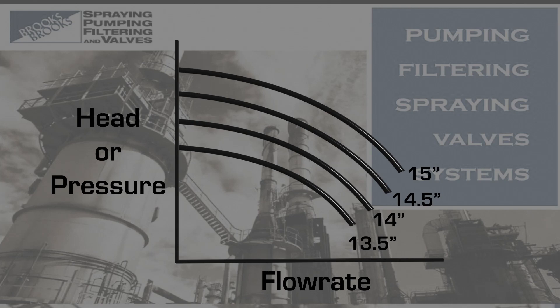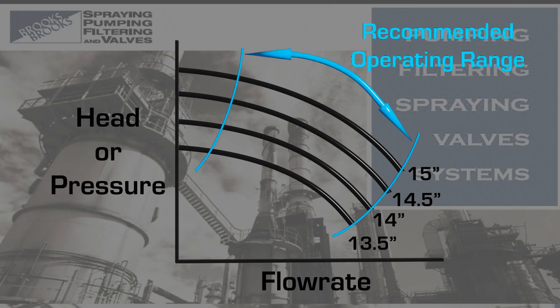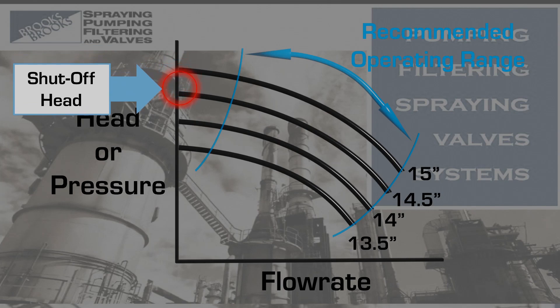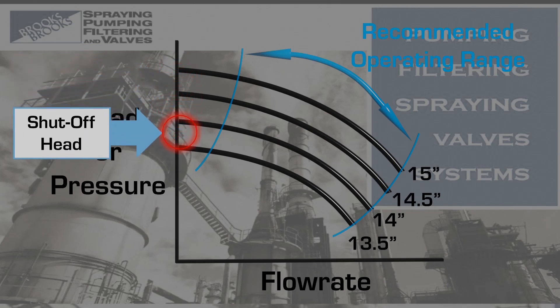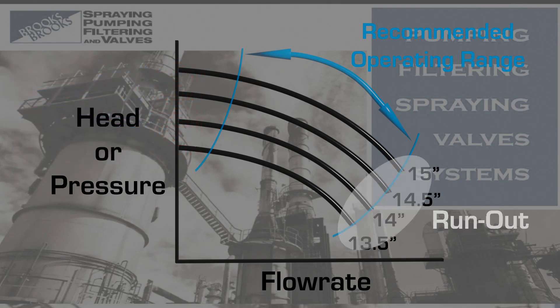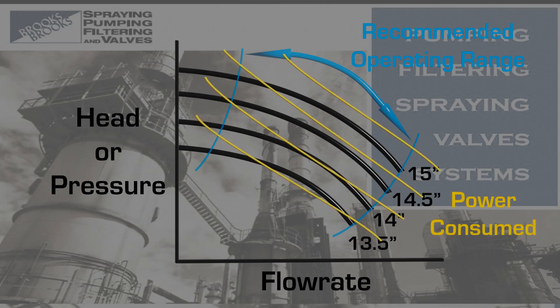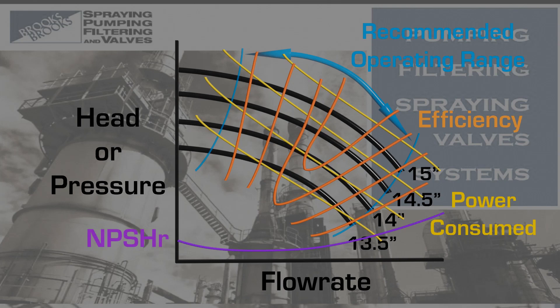Also shown on the curve is the recommended operating range, shut-off or dead head — which is the pressure or head at zero pump flow — and run-out, the maximum flow region of the curve. Other important information often shown is the power consumed, the efficiency, and the net positive suction head required by the pump, which will be covered in detail in a separate Quick Tech Tip.